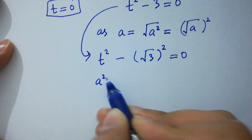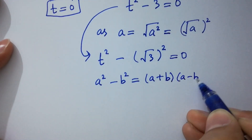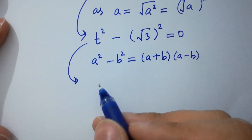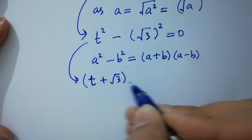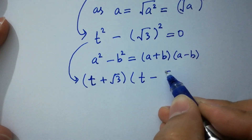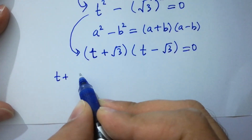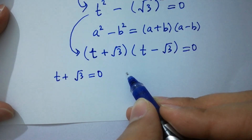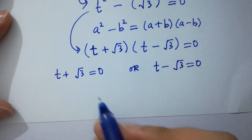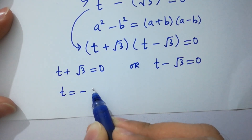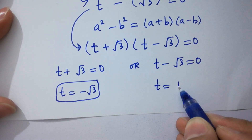Using the difference of squares identity, a squared minus b squared equals a plus b times a minus b, we factor the expression as t plus square root of 3 times t minus square root of 3 equal to 0. This gives either t plus square root of 3 equal to 0, giving t equal to minus square root of 3, or t minus square root of 3 equal to 0, giving t equal to plus square root of 3.